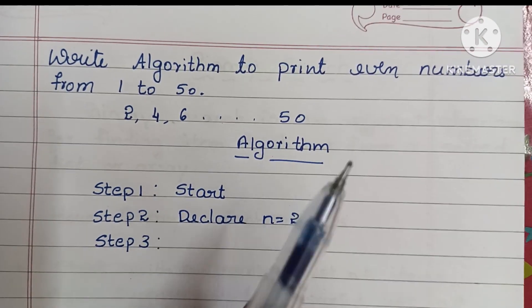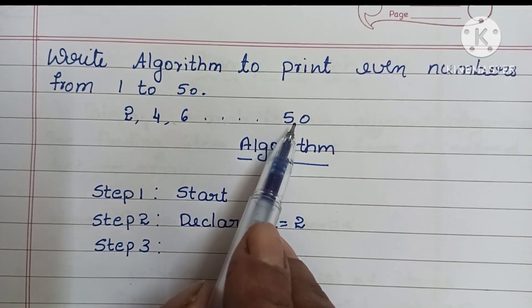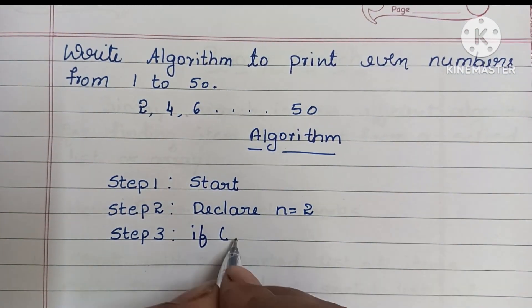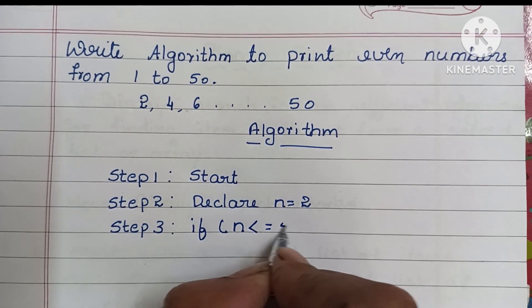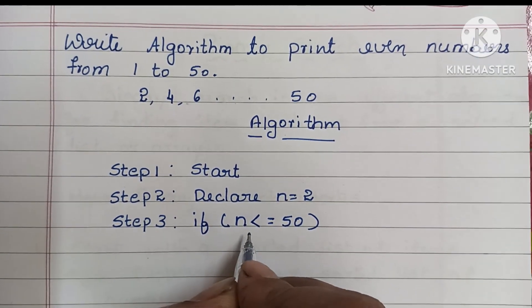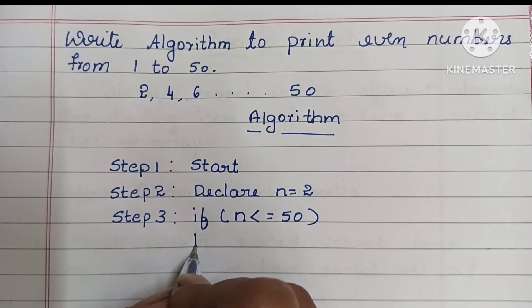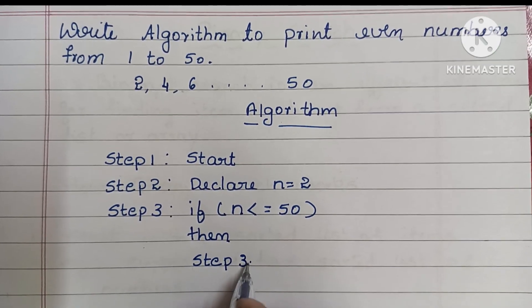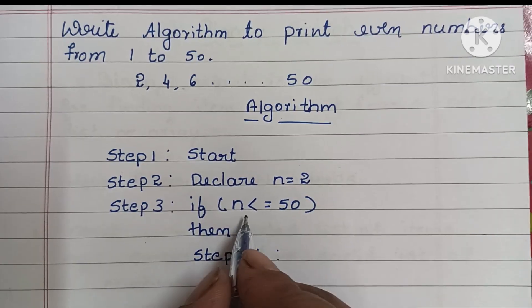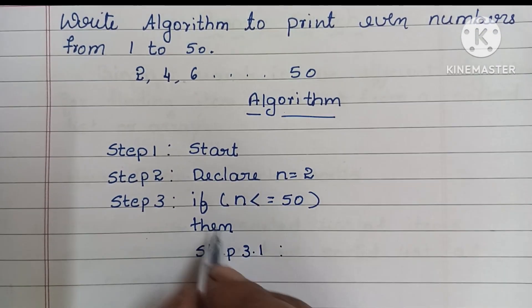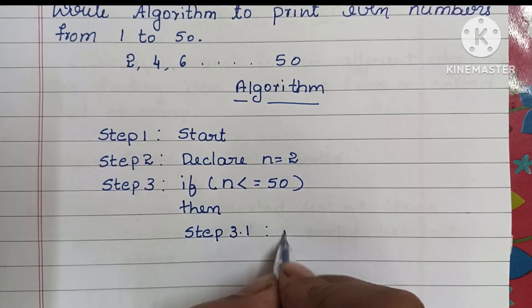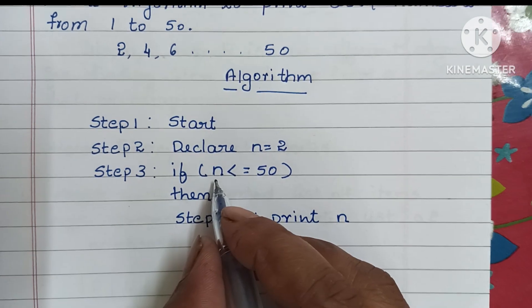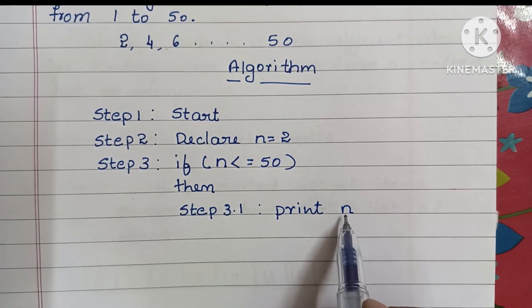Step 3: we need to print even numbers from 2 to 50, so we check if n is less than or equal to 50. If this condition is true, we execute step 3.1 — we print the value of n. Since n starts at 2, it will print 2 first.